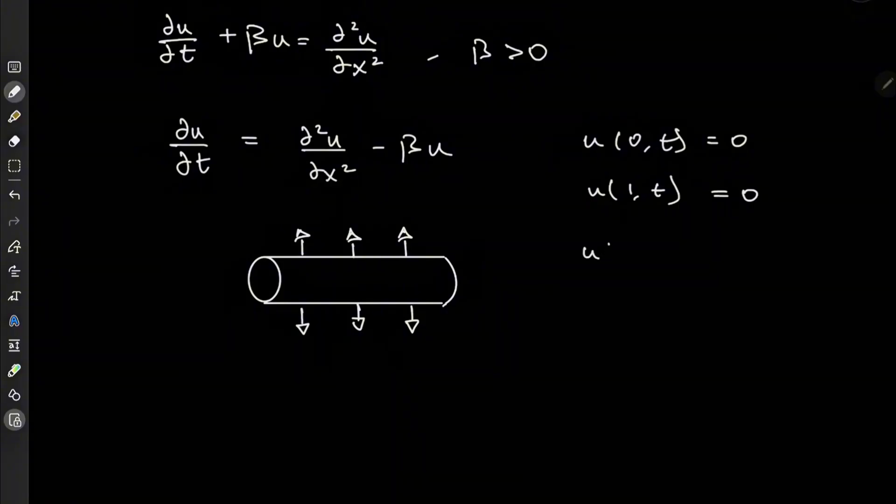And the initial profile, u of x and 0, would be any function f of x that is nice and continuous.